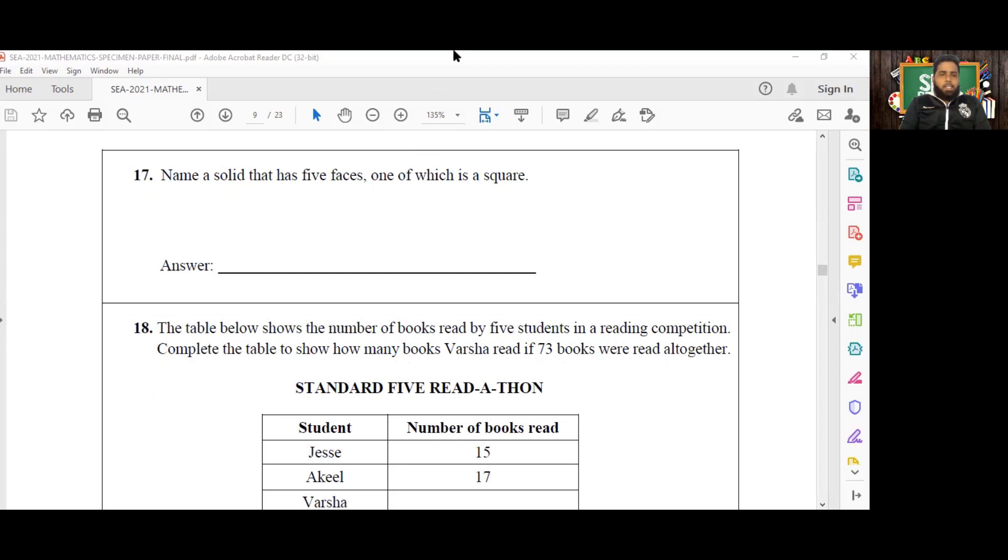Number 17 says name a solid that has five faces one of which is a square. So that is actually going to be a square based pyramid. So I'll see how best I can draw that here given my limitations here on the computer.